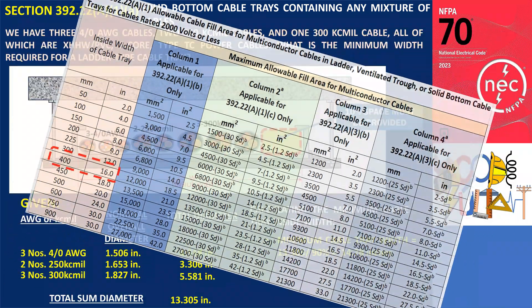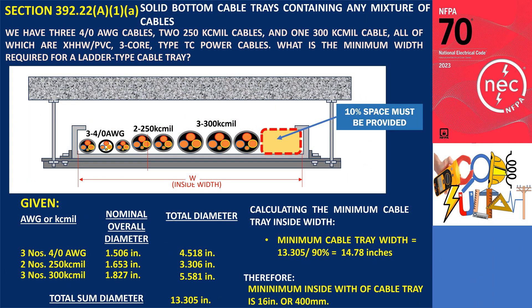Dividing this by 90% gives us 14.47 inches to determine the minimum width of the solid-bottom cable tray. Therefore, the minimum inside width of the solid-bottom cable tray should be 16 inches or 400 millimeters.